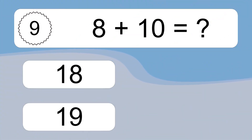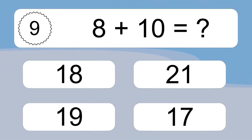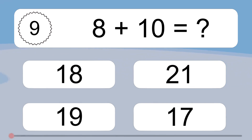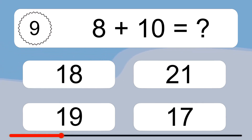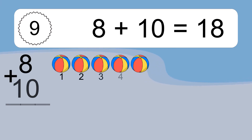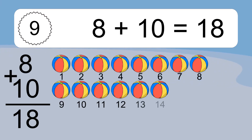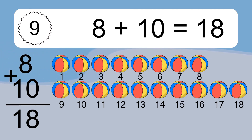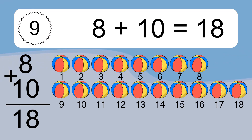Eight plus ten equals what? Eight plus ten equals eighteen. Let's count it: one, two, three, four, five, six, seven, eight, nine, ten, eleven, twelve, thirteen, fourteen, fifteen, sixteen, seventeen, eighteen.